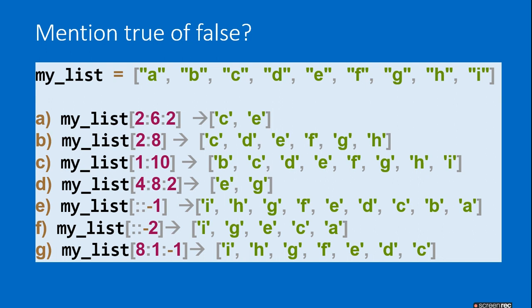my_list[8:1:-1]: position 8 is I and position 1 is B, and -1 means it reverses, so it traverses from I back to B. All these list slicing statements are true.